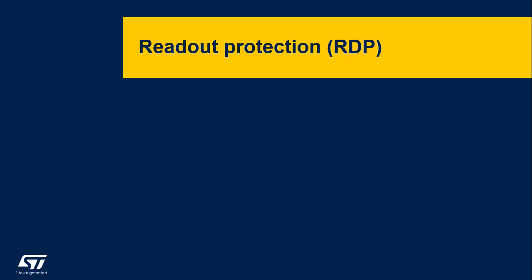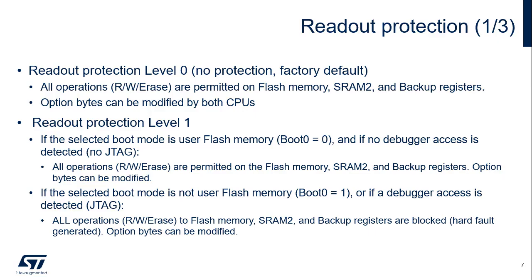Let's take a closer look at the details of the readout protection feature. The STM32 WL5 readout protection feature offers three levels of protection for all SRAM2 and Flash memory, as well as the backup registers. Level 0 means no protection — this is the factory default. Read, write, and erase operations are permitted in the SRAM2 and Flash memory, as well as the backup registers. Option bytes are changeable in Level 0. Note that PCROP and Cortex-M0 Plus security rules still apply.